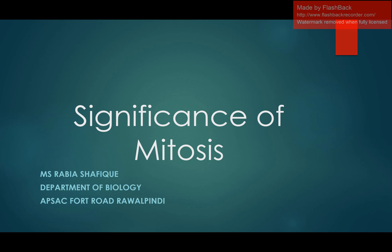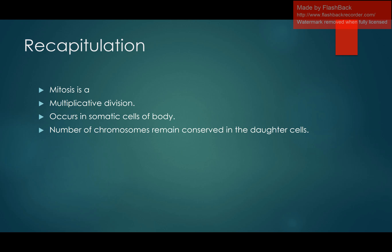But before moving towards the topic, we will just have a little recapitulation session. We are going to recap what we had already discussed in our previous lectures — that what is Mitosis. Mitosis is a type of multiplicative cell division in which cell chromosomes remain the same in the next generation as in the parental cell.